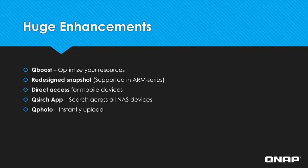QBoost optimizes your resources to keep your system running as smoothly as possible. With the redesigned snapshot, now ARM processor models can run snapshot as well. QTS 4.3.4 will also support direct access to backup files on your phone to your NAS through USB. The search app, QSearch, will now have the ability to search for files across all of your NAS devices. And QPhoto lets you upload photos and videos directly to your NAS.